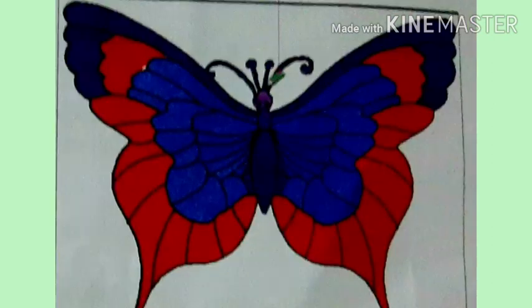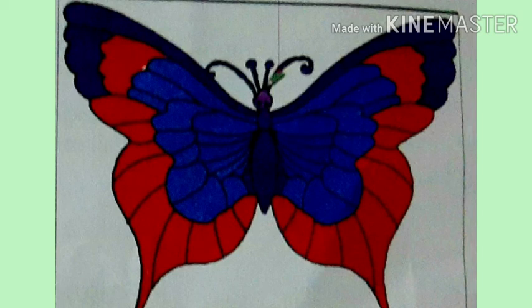Step 5: Select the purple color and paint. After you have colored the butterfly, select the pencil tool and draw the eyes with black, as you can see in this picture.